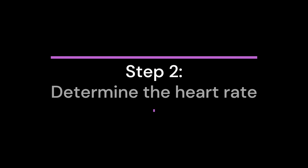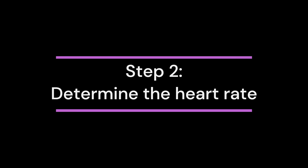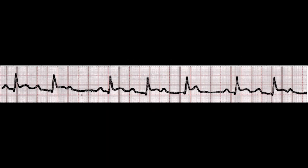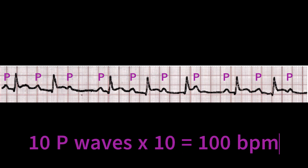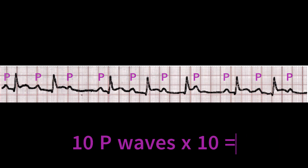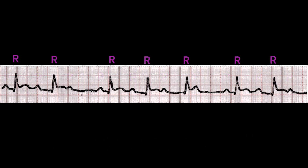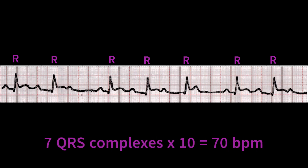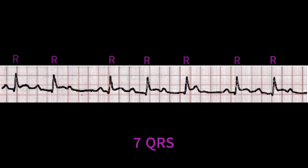Step 2: Determine the heart rate. The atrial rate is always greater than the ventricular rate in Mobitz type 1. In this 6-second EKG strip, we can count 10 P waves — multiply that by 10 and we get 100 beats per minute as the atrial rate. There are 7 QRS complexes; multiply that by 10, giving us a ventricular rate of 70 beats per minute. Both rates are usually within normal limits, meaning 60 to 100 beats per minute.